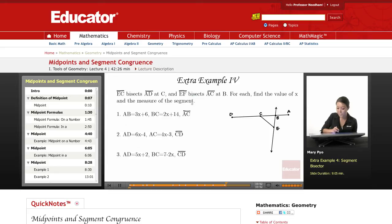EF bisects... this is supposed to be a line, and let's make this F right here. That means line EF bisects AC at B. That means AC is bisected. B is the midpoint. For each, find the value of x and the measure of the segment. So that means AC and CD is the same, and then AB and BC is the same.